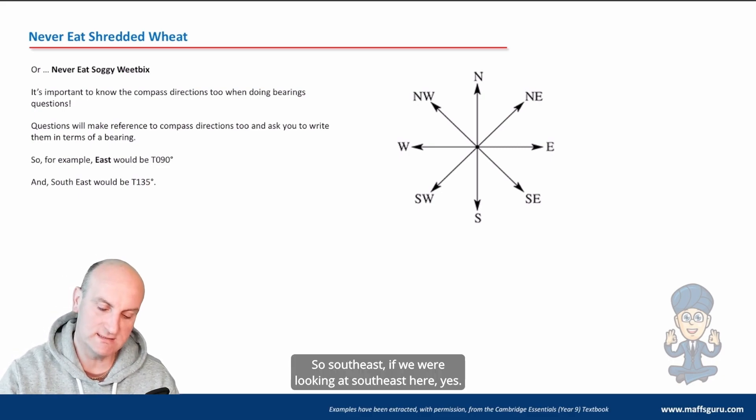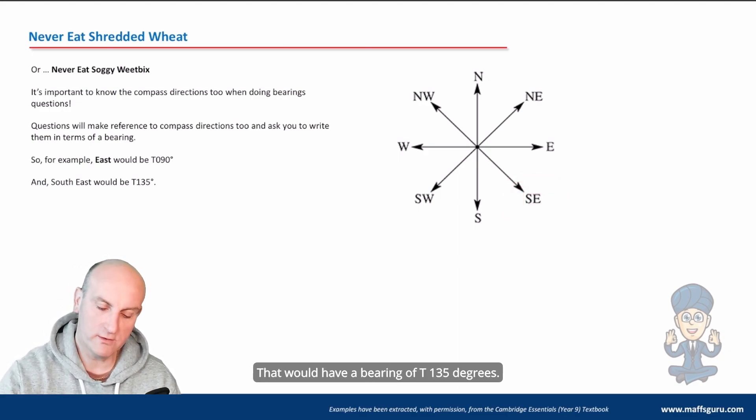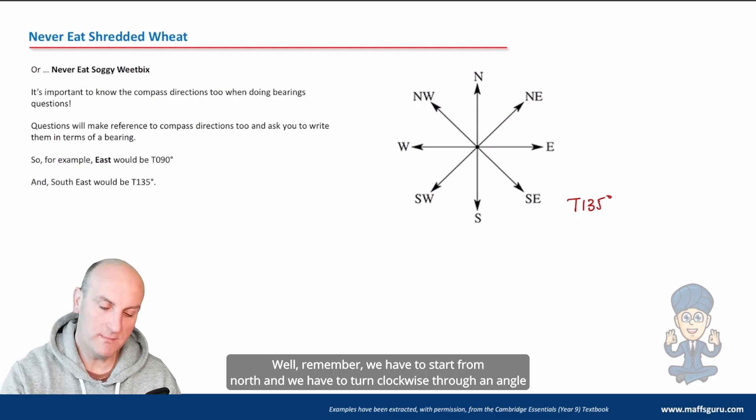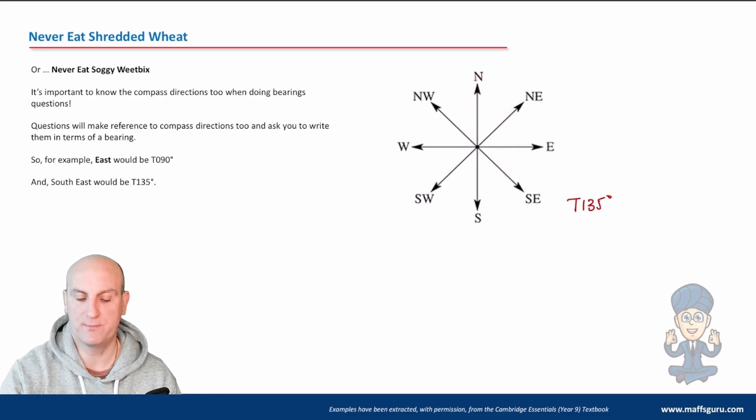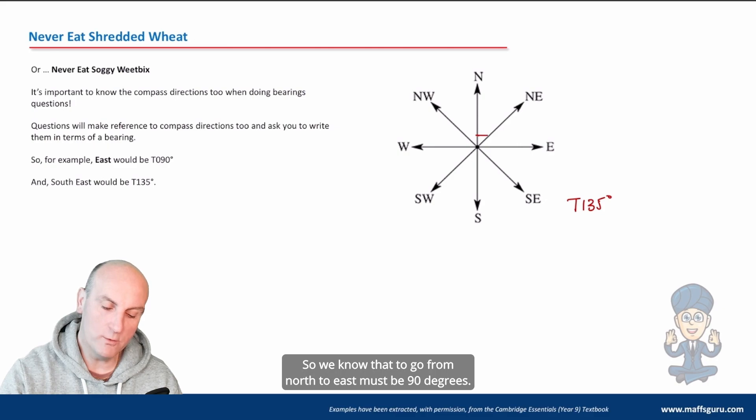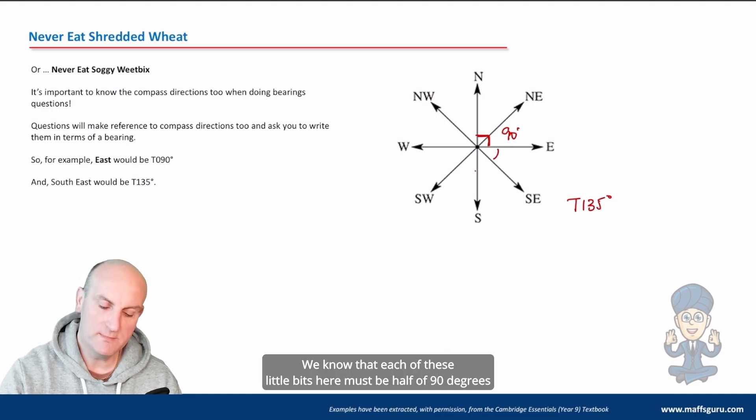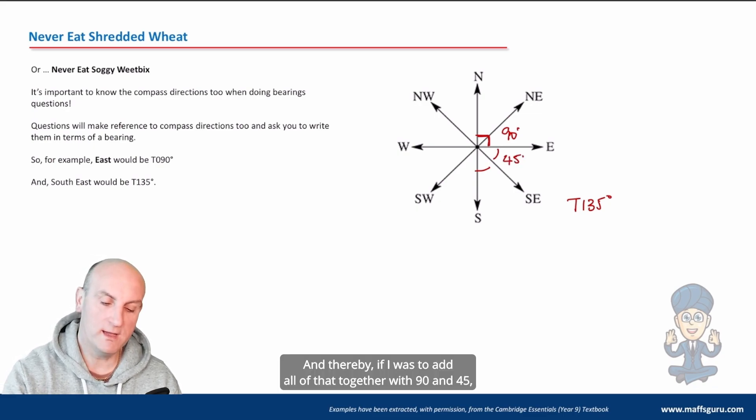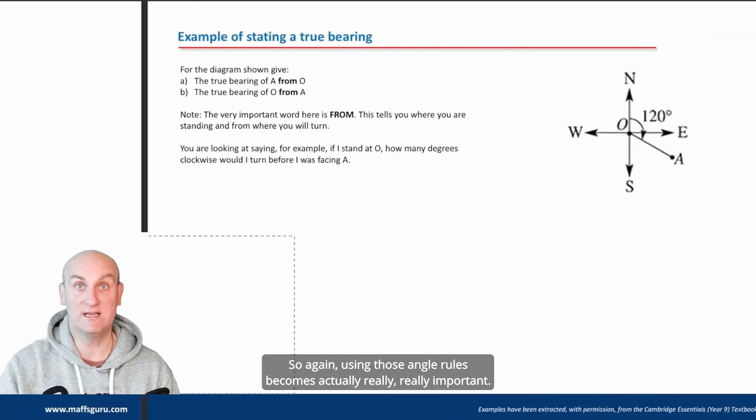So southeast. If we were looking at southeast here, that would have a bearing of T 135 degrees. So I'm going to write T 135 degrees. You want to say, how would I know that? Well, remember, we have to start from north and we have to turn clockwise through an angle to get to where we want to be. So we know that to go from north to east must be 90 degrees. So there's 90 degrees. We know that each of these little bits here must be half of 90 degrees because a right angle split in half. So they would be 45 degrees. And thereby, if I was to add all of that together with 90 and 45, it would give me the 135 degrees. So again, using those angle rules becomes actually really, really important.